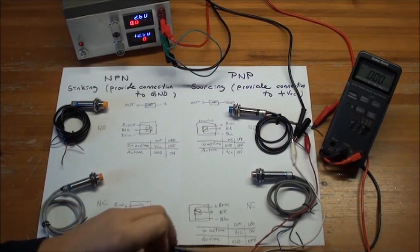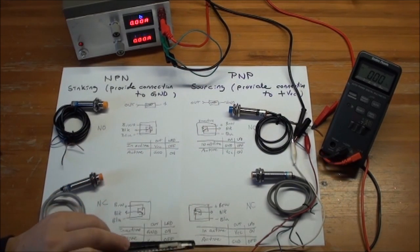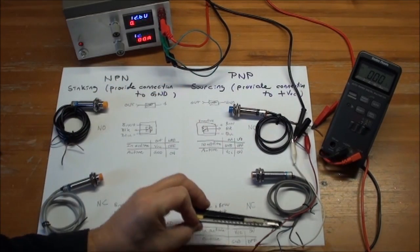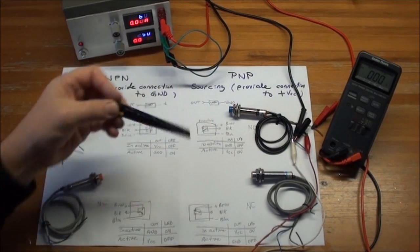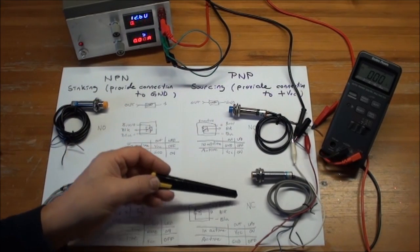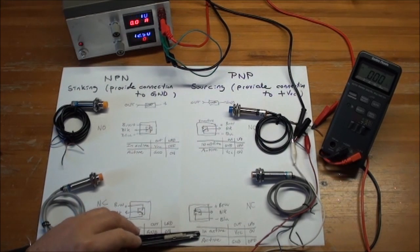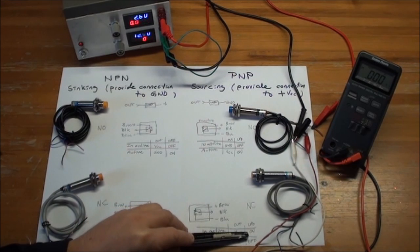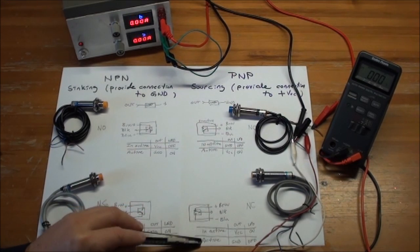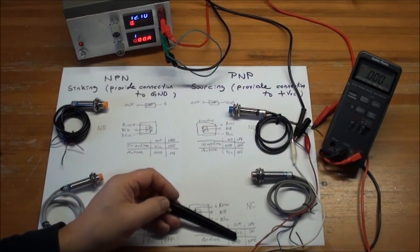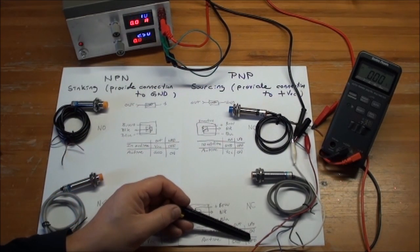And then of course the last one, I think we can skip connecting that one, is again a mirror image of this one and this one. So in the PNP normally closed situation, what you would see in the inactive state, if I connected it, is that you got 24 volts out and the LED would be on. And in the active state, when you activate it, you will get ground out and the LED will go off.